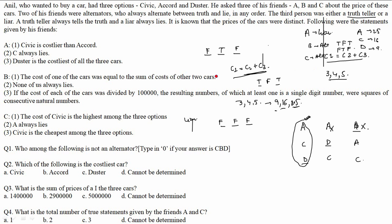Some students may wonder if we need to check more cases. But no — we have only one person who can be truth teller or liar. We checked all three for truth teller (all eliminated) and all three for liar. Only A-liar and C-liar cases are valid. B-liar was eliminated. So we have covered all possible cases.